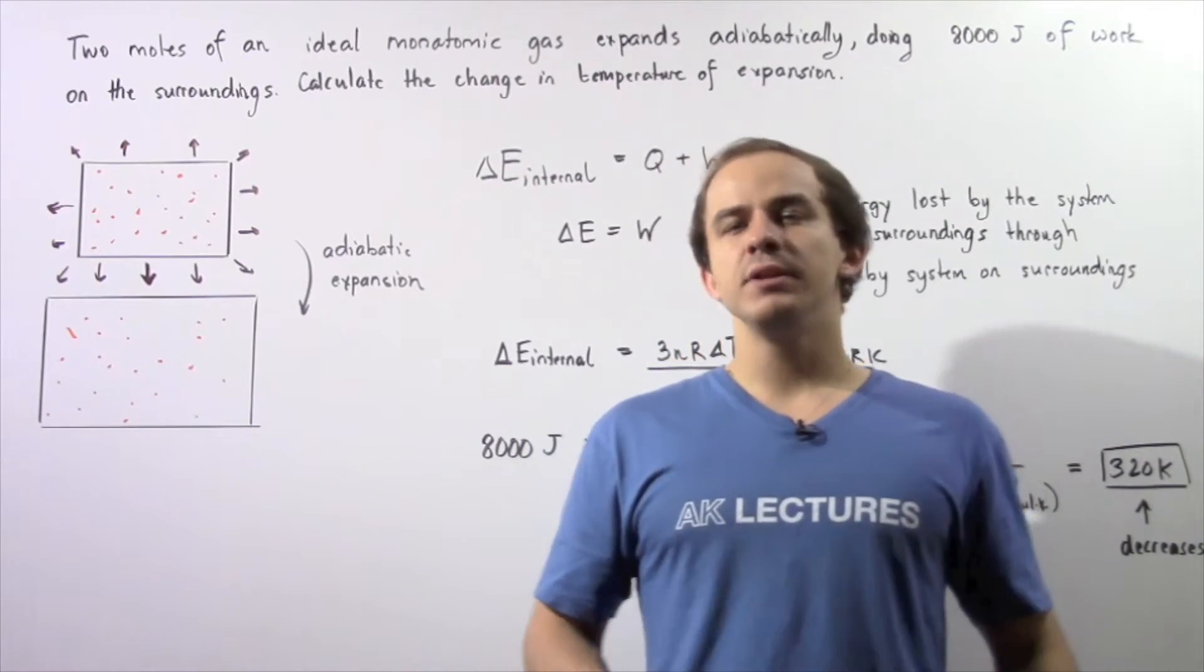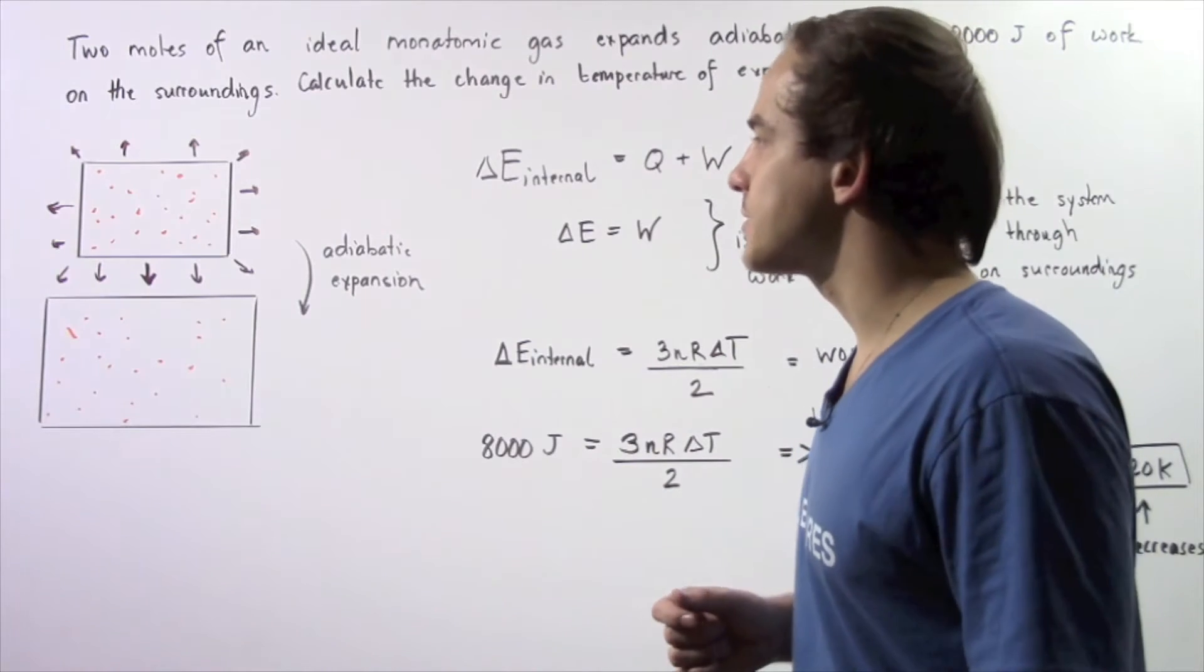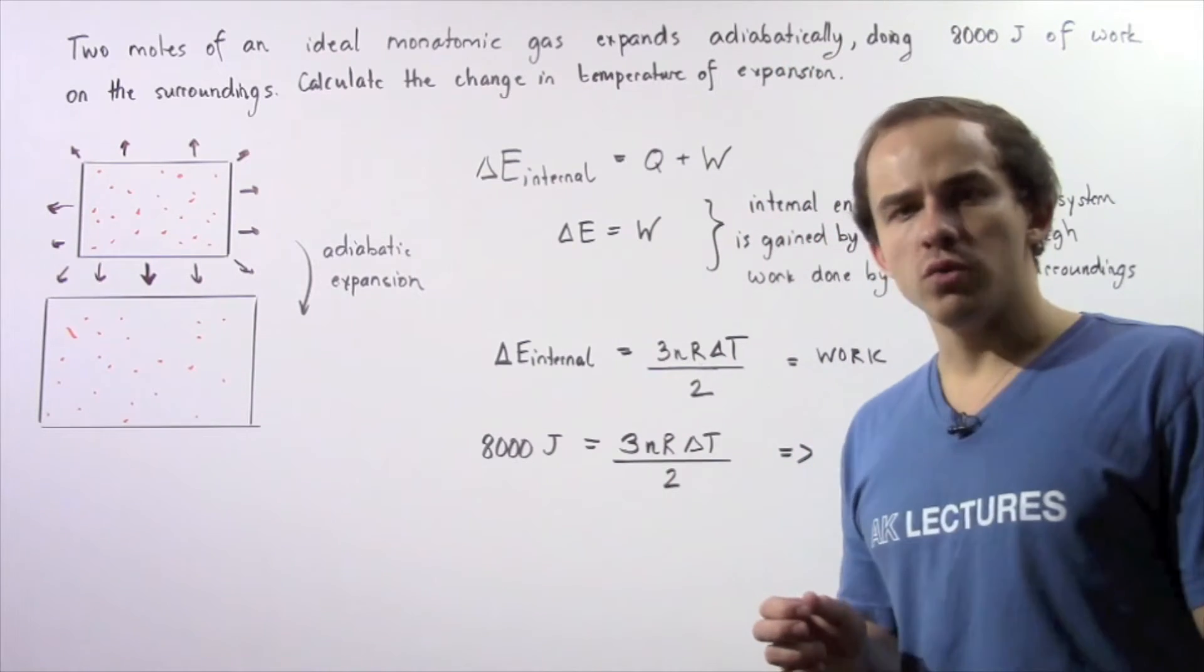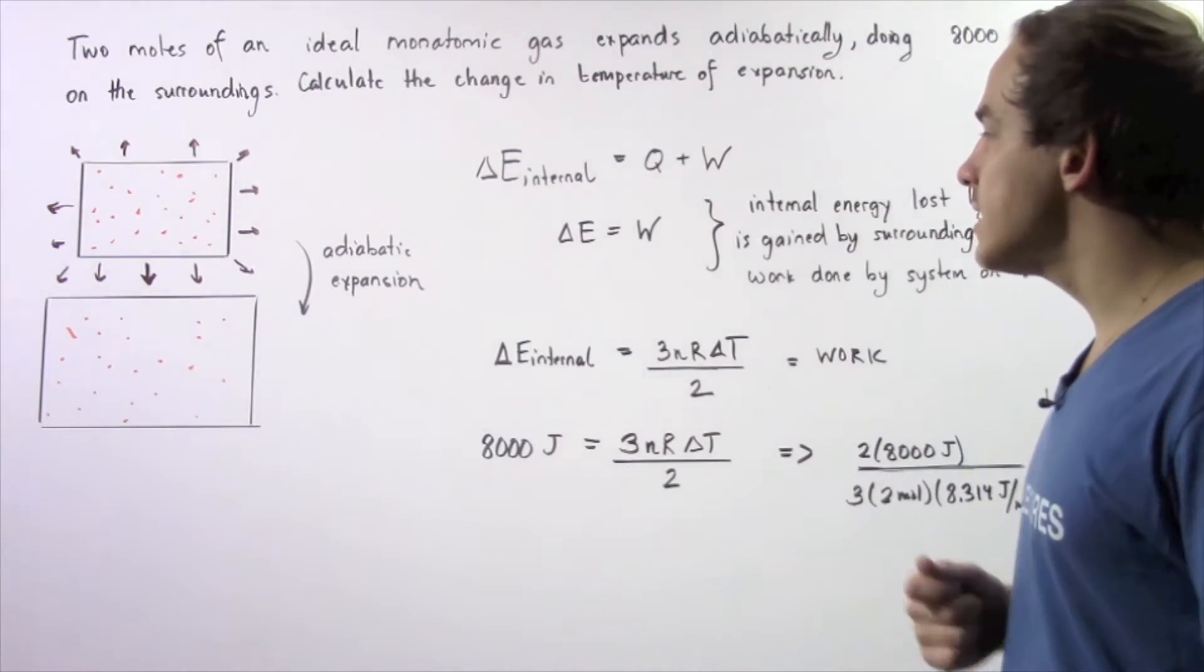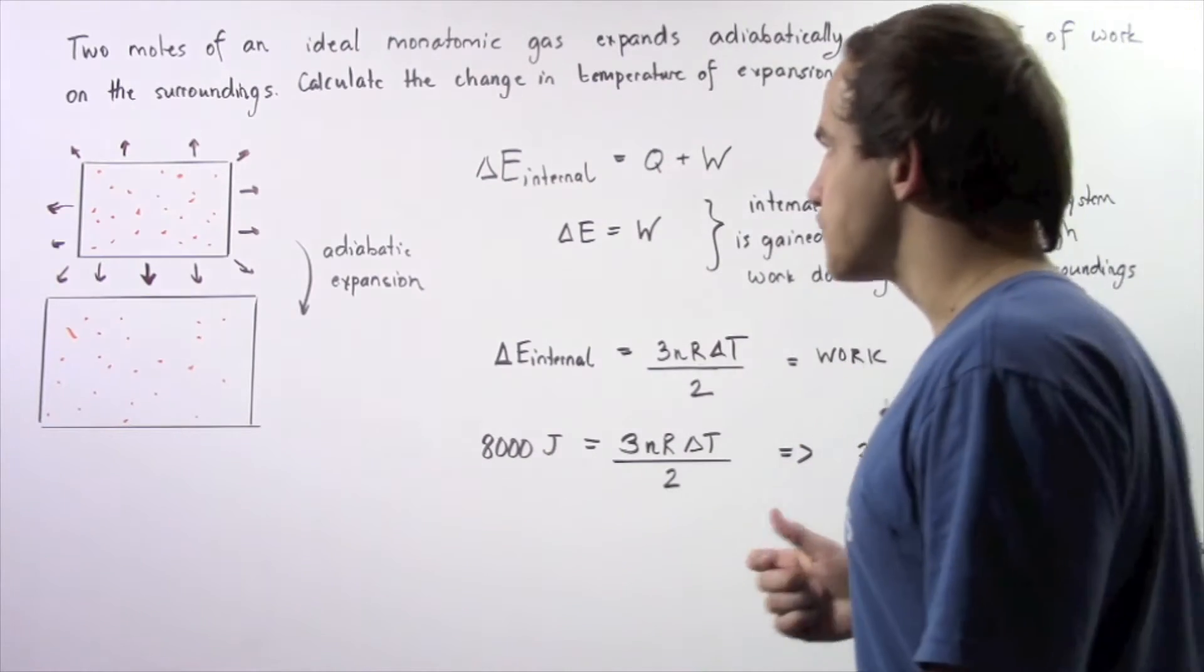Let's look at the following example using the first law of thermodynamics. Suppose two moles of an ideal monatomic gas expands adiabatically, doing 8,000 joules of work on the surroundings.